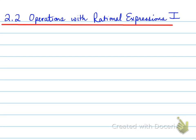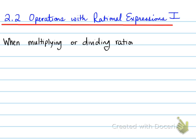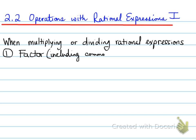What we're doing here is we need to be able to work with rational expressions when multiplying and dividing. When multiplying or dividing rational expressions, you need to follow these steps. Number one: factor, including common factor whenever possible, meaning that you must look for common factor first, then factor the remaining polynomial so that later on we can use those factors.